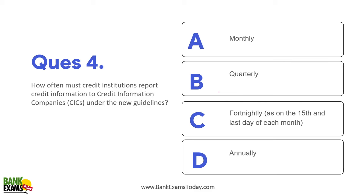How often must credit institutions report credit information to the CICs under the new guidelines? It used to be every 30 days, but now it is fortnightly — that is, every 15 days, specifically on every 15th and last day of every month.